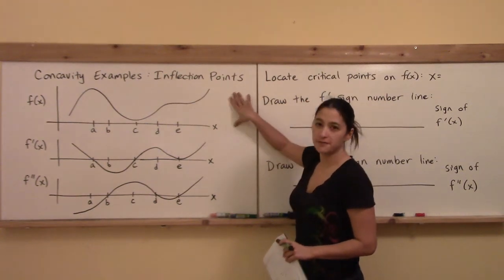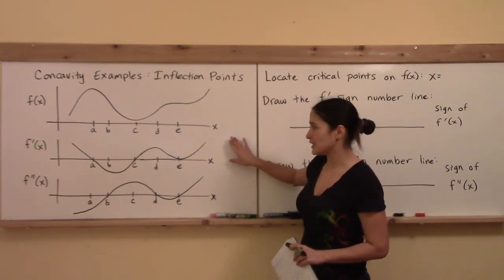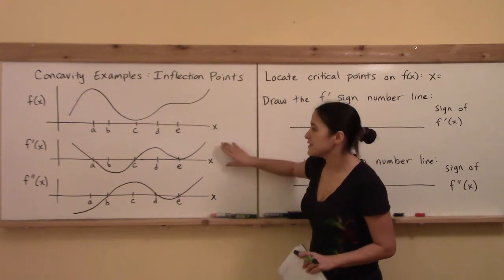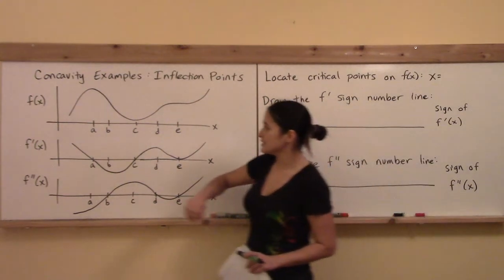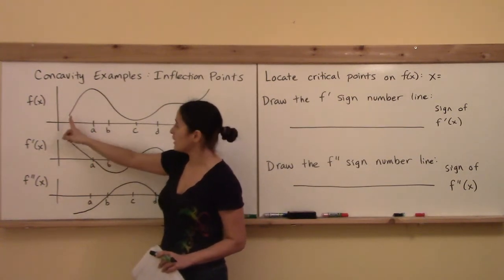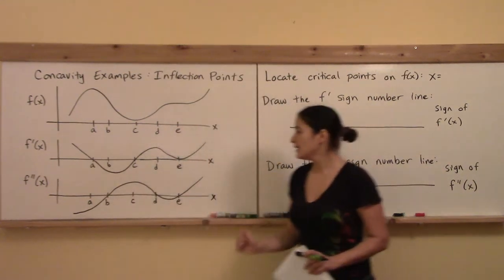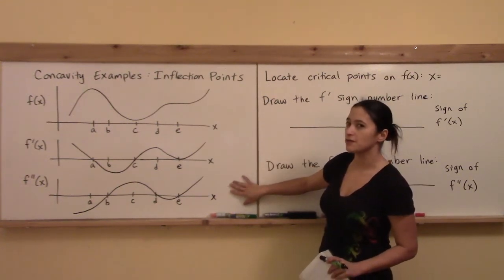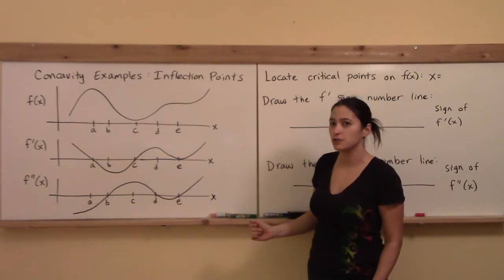I've drawn a picture of a function f(x) versus x. Right below it, I've got a picture of the derivative of f(x) — this middle picture has the same x-axis, but instead of plotting the original function, it plots the value of the slope of the tangent line. Below that, I've drawn a graph of the second derivative, which is the derivative of the first derivative.